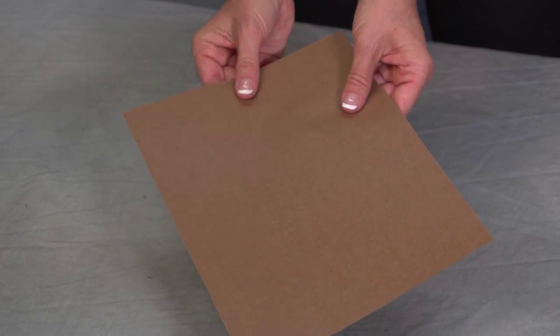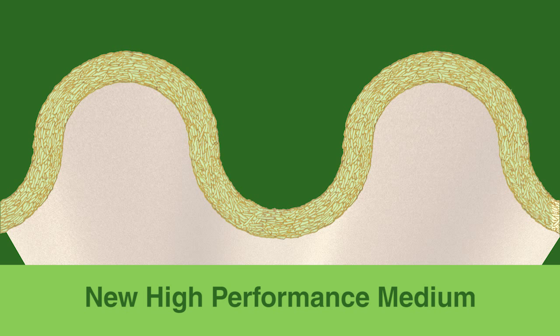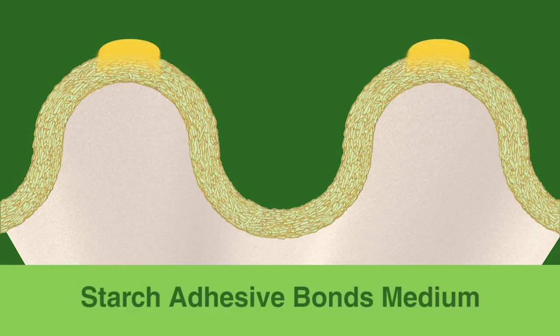Finally, there's a sustainable solution. A new high-performance medium suffused with a special moisture-resistant compound activated by the heat of the corrugator. To protect the integrity of the flute, fibers are left exposed to allow starch adhesive to bond the medium to the liners.